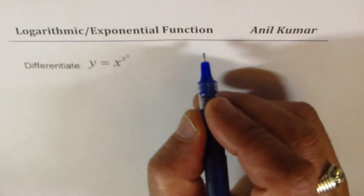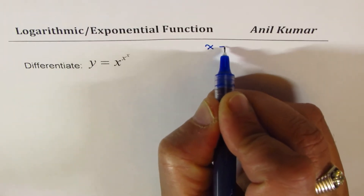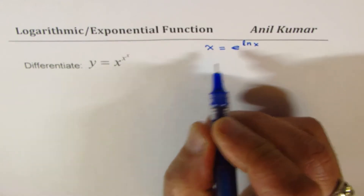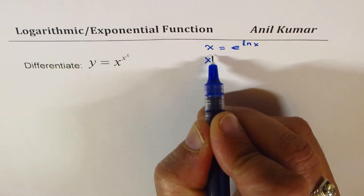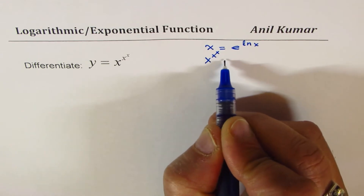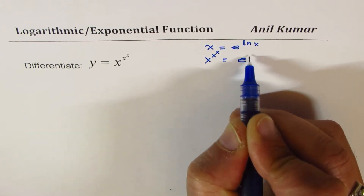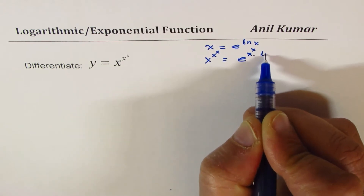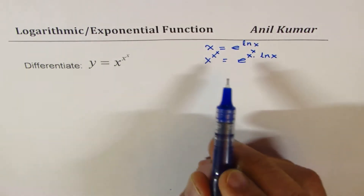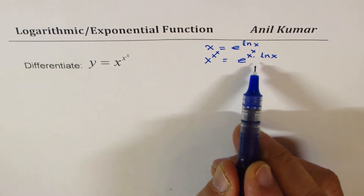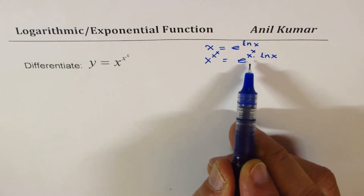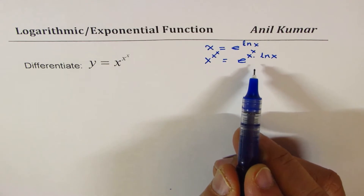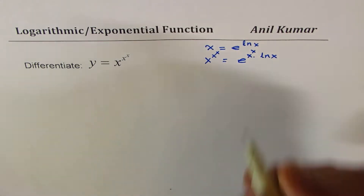You could write x as e to the power of ln x. So x to the power of x to the power of x could be written as e to the power of x to the power of x times ln x. Once you write your function in this fashion, you can apply the product rule and find the derivative. That could be method one.